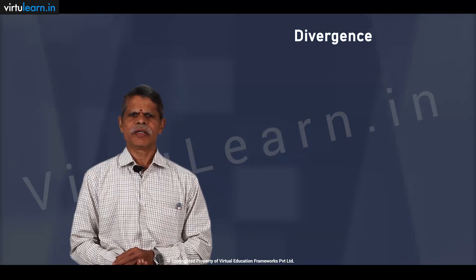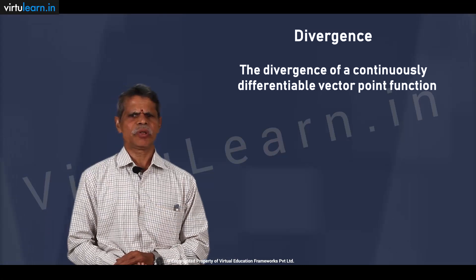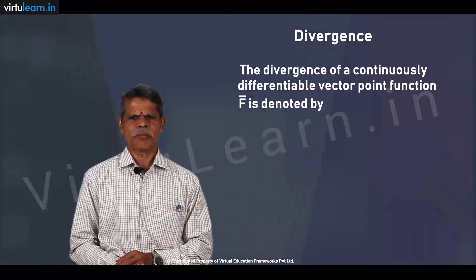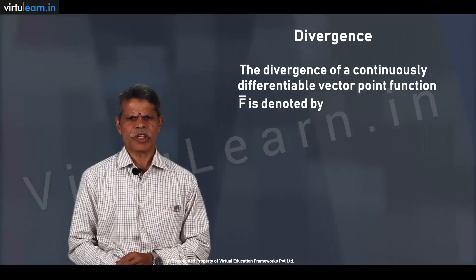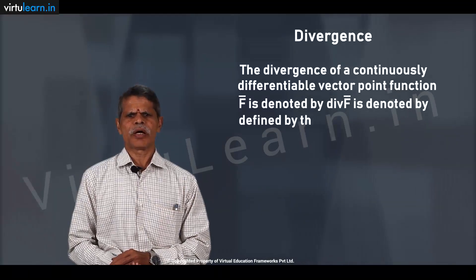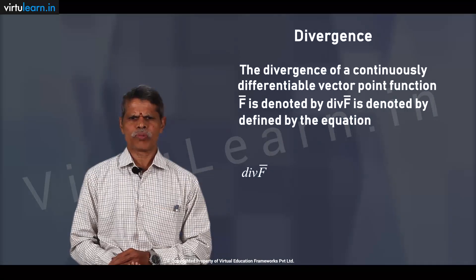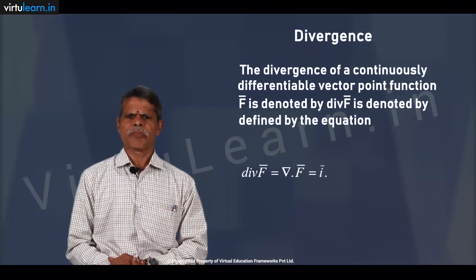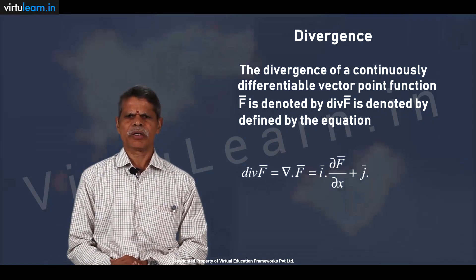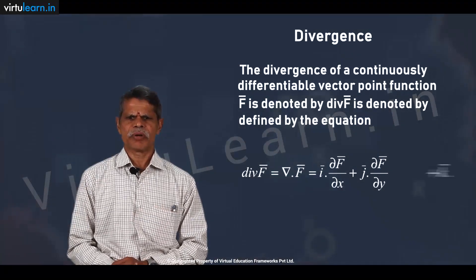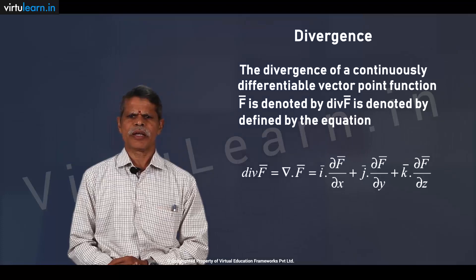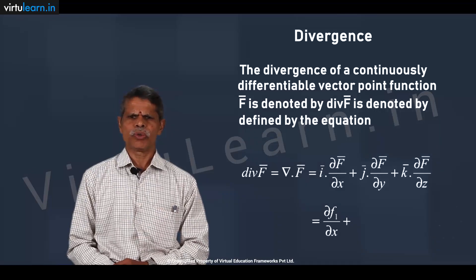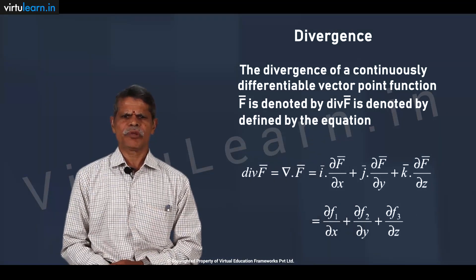So how do we define divergence of a continuously differentiable vector function f-bar? If f-bar is f1 i-bar plus f2 j-bar plus f3 k-bar, then divergence of f-bar, abbreviated as div f-bar, is equal to del dot f-bar, which equals i-bar dot (∂f-bar/∂x) plus j-bar dot (∂f-bar/∂y) plus k-bar dot (∂f-bar/∂z), or simply ∂f1/∂x plus ∂f2/∂y plus ∂f3/∂z.